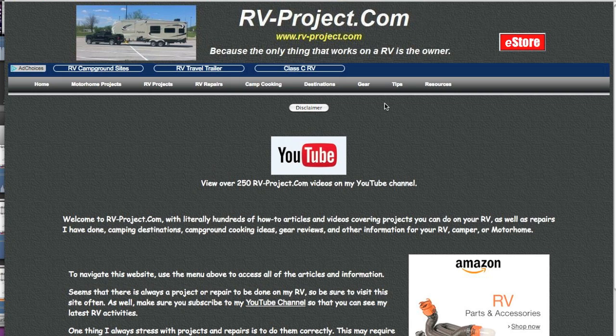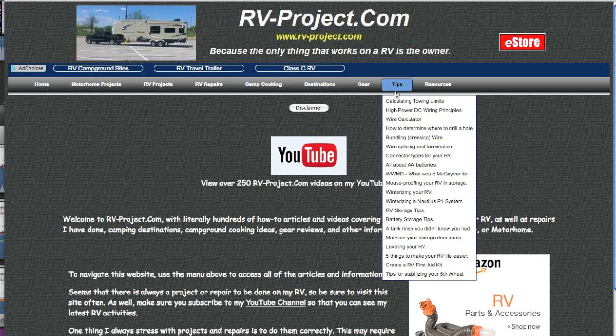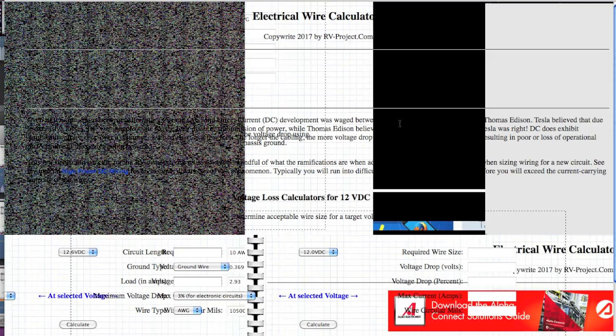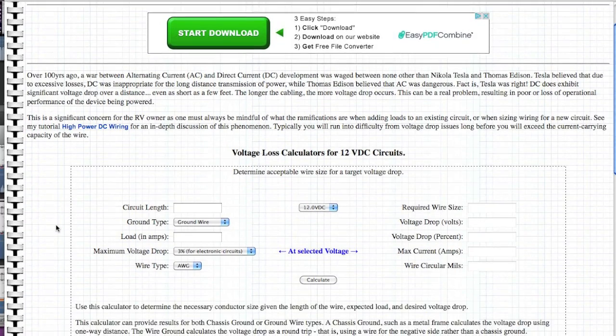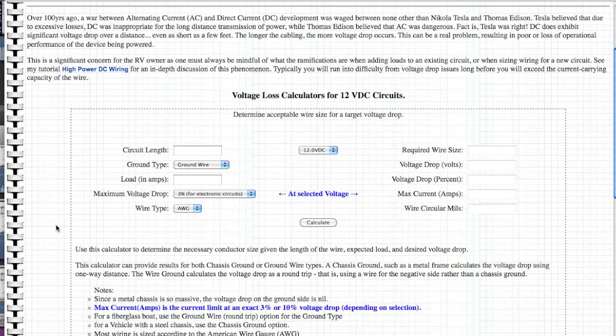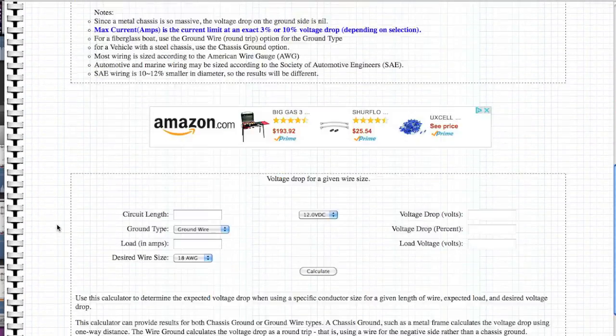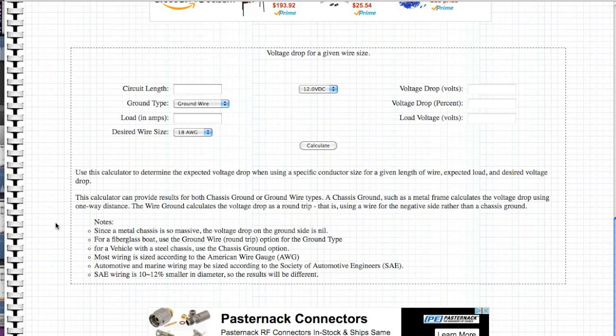You can get the calculator by going to my website, clicking on tips, and then wire calculator. There's actually two calculators here. The first one will allow you to find out what required wire size is, depending on the circuit length and the load in amps. The second one is for how much voltage drop you can expect if you already have a wire installed.